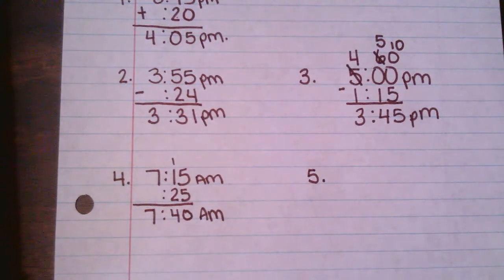Last one, number five. Explain why it is important to know if the time is a.m. or p.m. when figuring out how much time has elapsed.